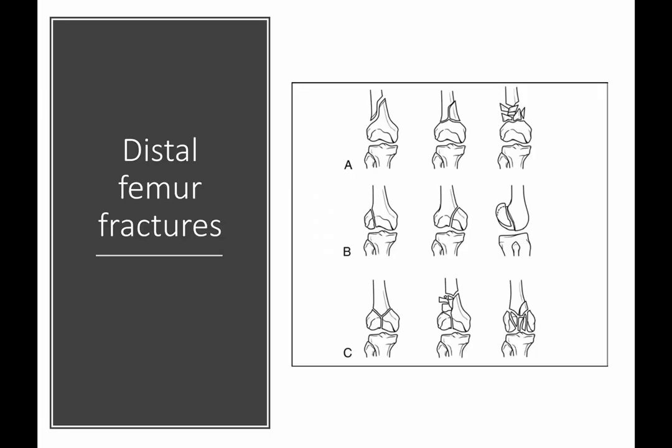A few words about distal femur fractures. This is a classification scheme — you don't need to know it, but it shows common fracture patterns. You can have fractures that don't go into the joint at all, or they can get very complicated. Whereas other fractures here have varying degrees of intra-articular involvement. It's a femur fracture, and certainly extending up toward the femoral shaft can cause significant blood loss.